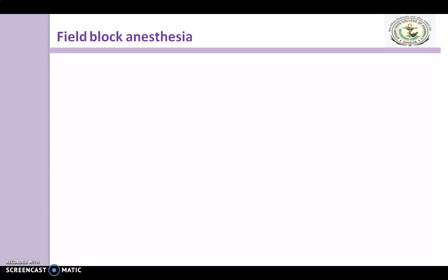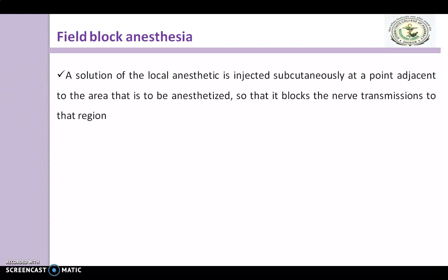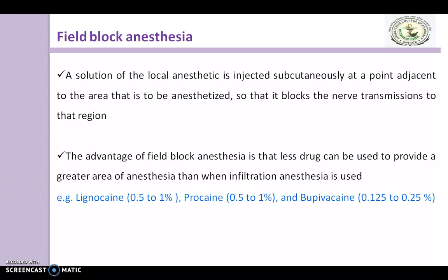Next is field block anaesthesia. A solution of the local anaesthetic is injected subcutaneously at a point adjacent to the area to be anaesthetized, blocking nerve transmission to that region. The advantage of field block anaesthesia is that less drug can be used to provide a greater area of anaesthesia than with infiltration anaesthesia. Examples of local anaesthetics used include lignocaine at 0.5 to 1% concentration, procaine, and bupivacaine.